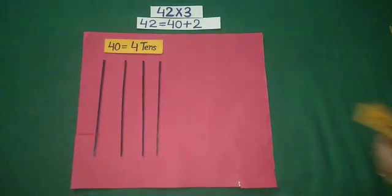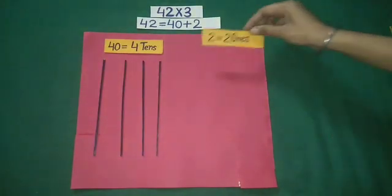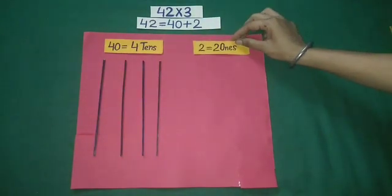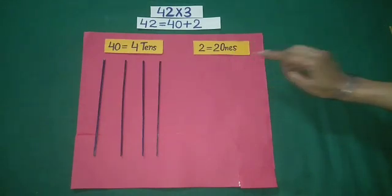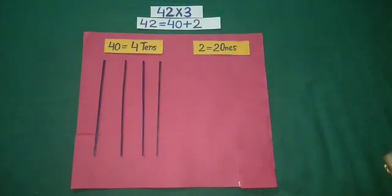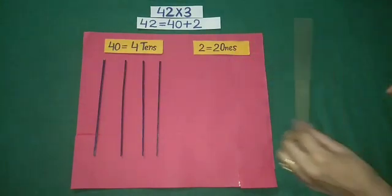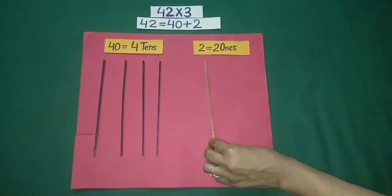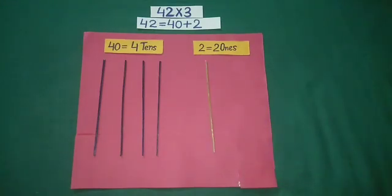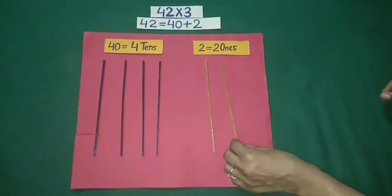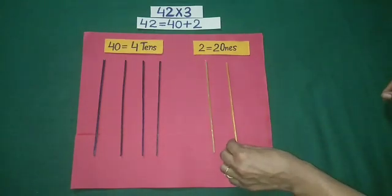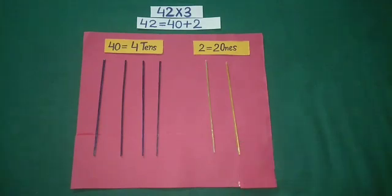2 is equal to 2 ones. For ones, we will use yellow colored sticks. For 2 ones, we keep 2 yellow sticks vertically.